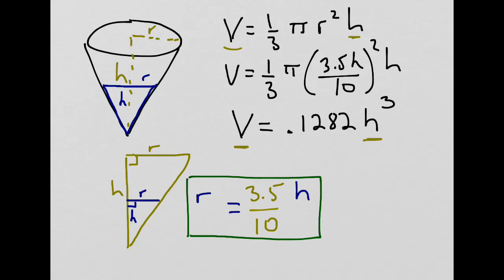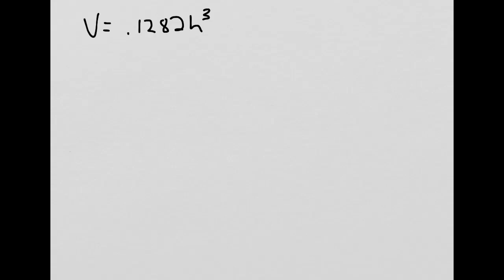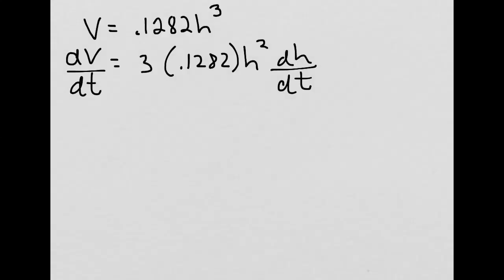Now we can differentiate both sides of the equation with respect to time, and in that way relate the change in volume with respect to time to the change in height with respect to time. We know that volume equals 0.1282h³, and when we differentiate with respect to time using the chain rule, we get dV/dt equal to 3 times 0.1282 h² times dh/dt, which multiplies out to 0.3846 h² dh/dt.